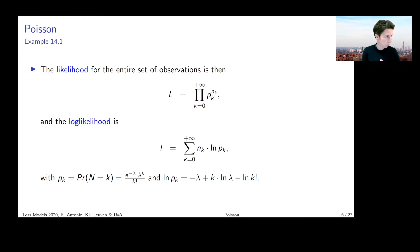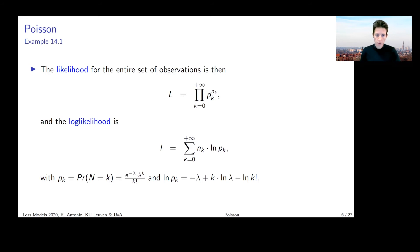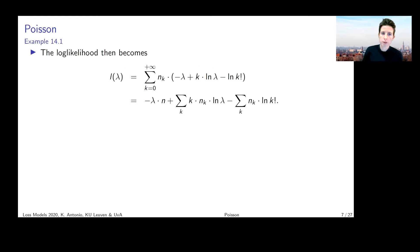If we are willing to assume a Poisson distribution, we replace the general p_k with the Poisson probability function, so that the likelihood becomes a function of the unknown parameter lambda. We can then take the derivative of the log-likelihood with respect to lambda, set it equal to zero, and solve for the unknown lambda. That is what we will do on the next sheet.